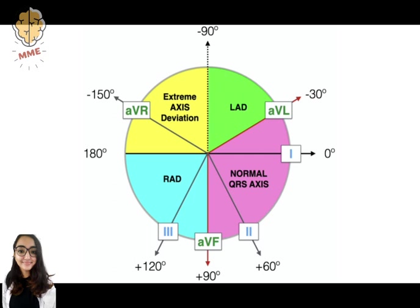In healthy individuals, you would expect the axis to lie between minus 30 and 90 degrees.